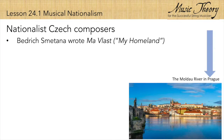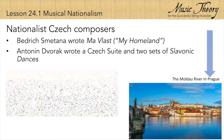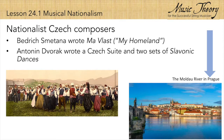Smetana paved the way for his successor, Antonin Dvořák, a Czech composer whose nationalist orchestral works include his Czech Suite and two sets of Slavonic Dances.